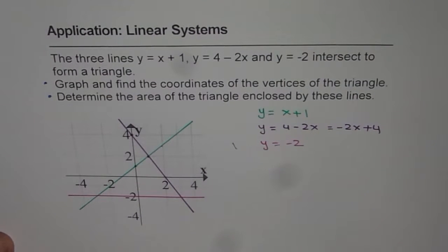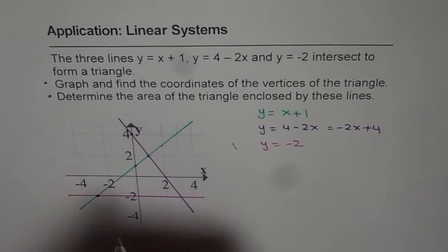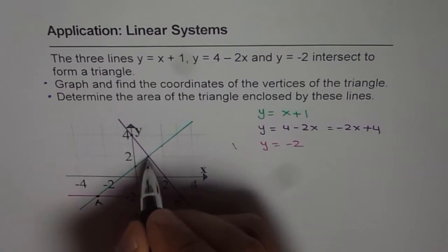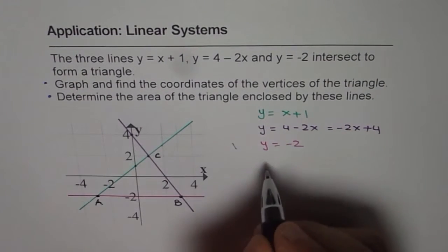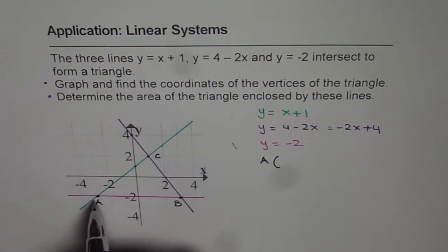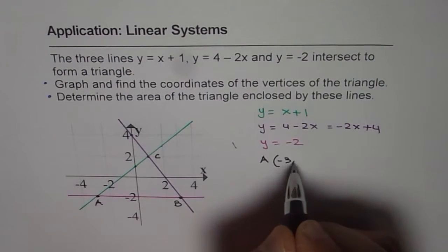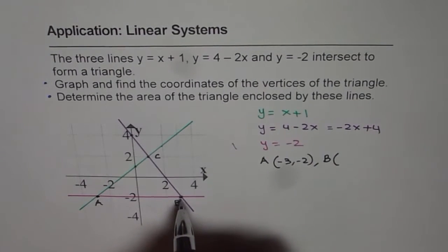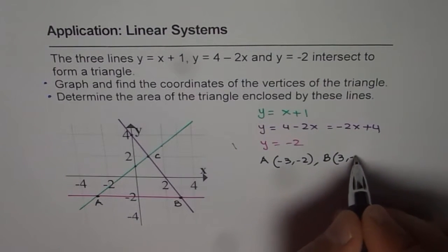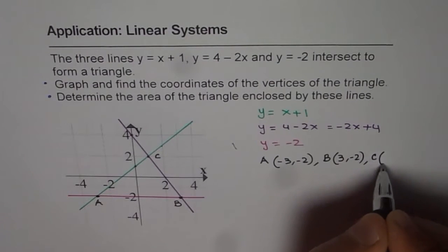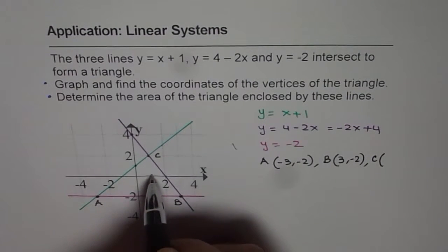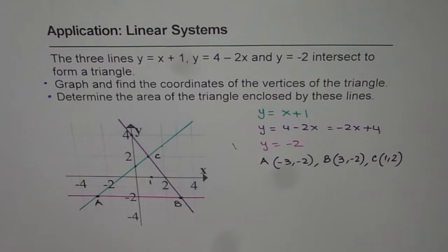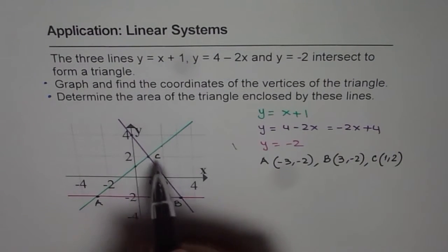So first let us write down the vertices of the triangle. Let's say that is point A, this is point B, and this is point C for us. So we get A is (-3, -2), and point B is (3, -2). Point C is (1, 2). So these are the three points of our triangle.